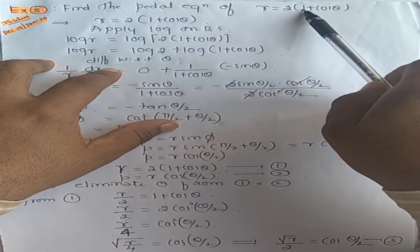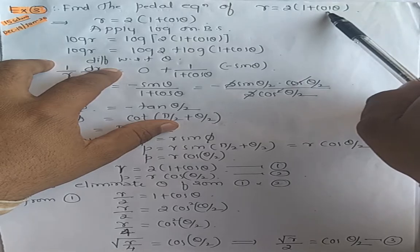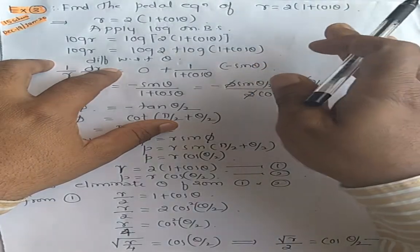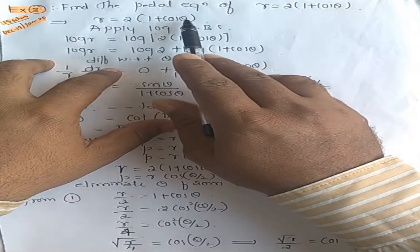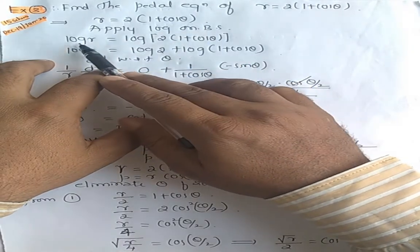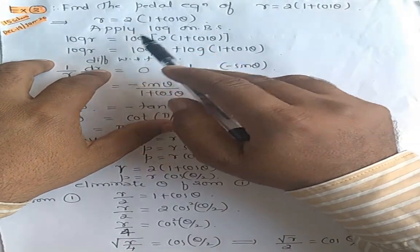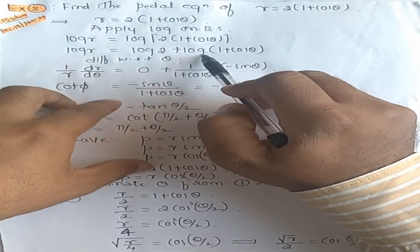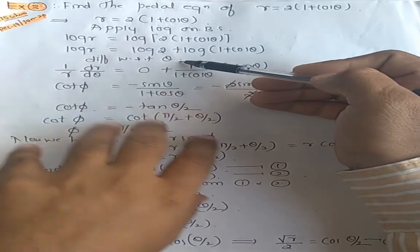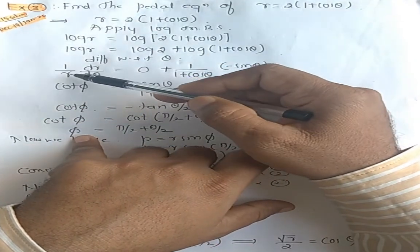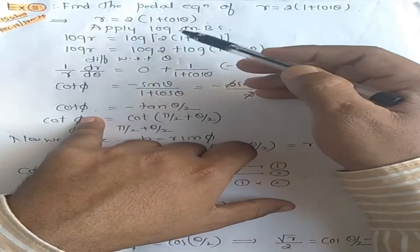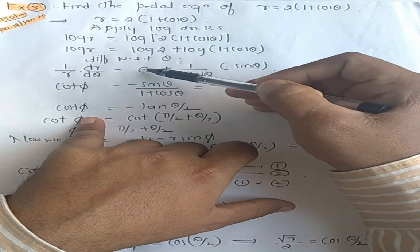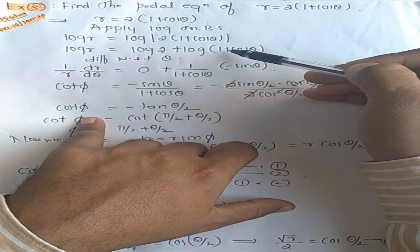Find the pedal equation of r equals 2 into bracket 1 plus cos theta. Now let us go further. r and theta are there, so apply log on both sides. Log r, log here also. Then log r as it is. Log u plus log v, I have applied. Differentiate with respect to theta. Log r is 1 by r, dr upon d theta.